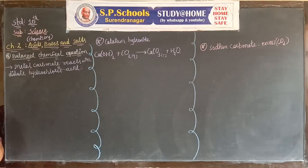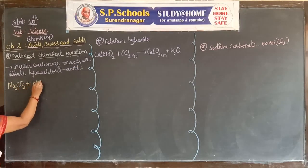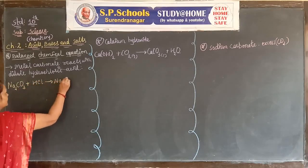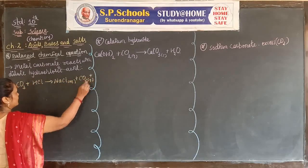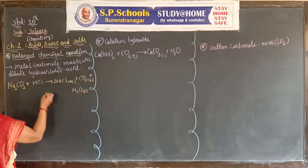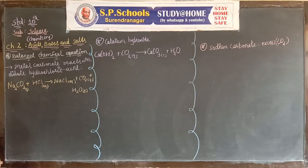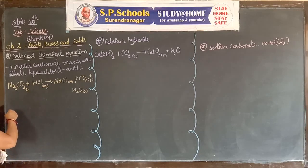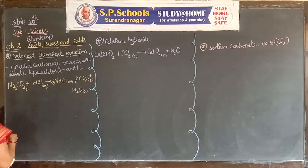Let's write the equation. For metal carbonate, we take the example of sodium carbonate: Na2CO3 reacts with HCl to form NaCl plus CO2 plus H2O. In the activity we take 0.5 gram of sodium carbonate and 0.5 gram of sodium hydrogen carbonate. To balance the equation, we put 2 before NaCl.